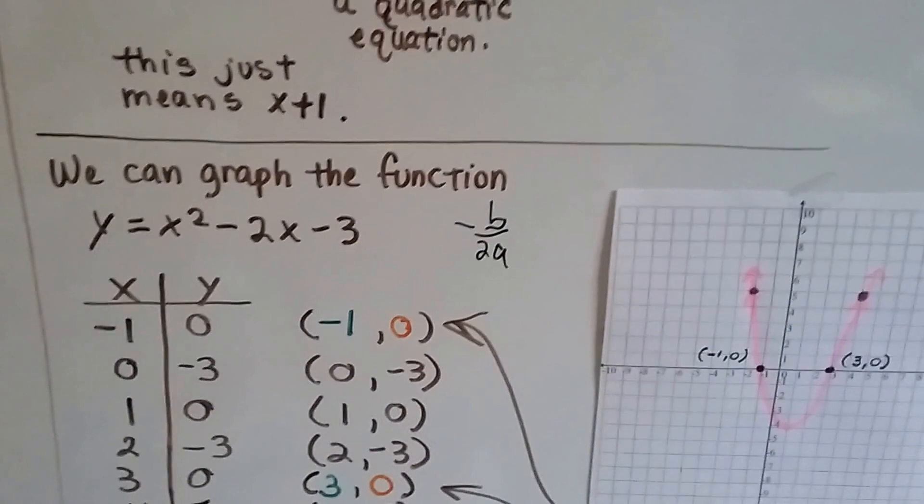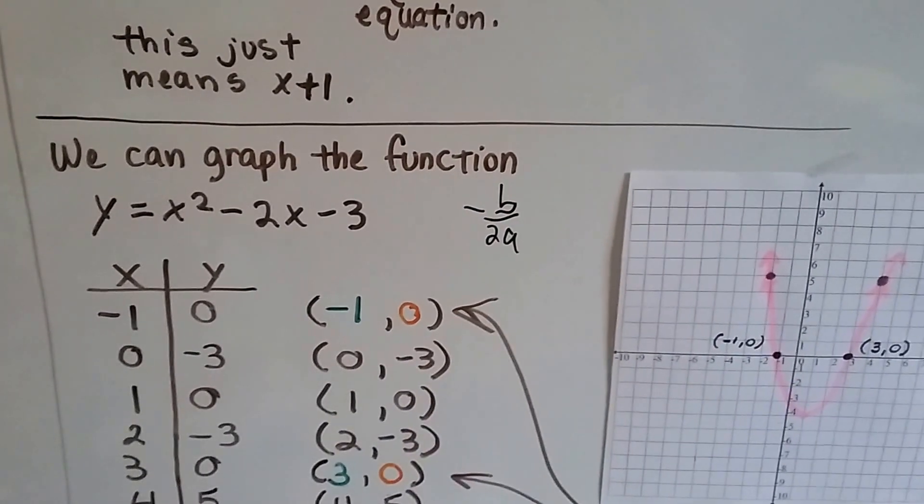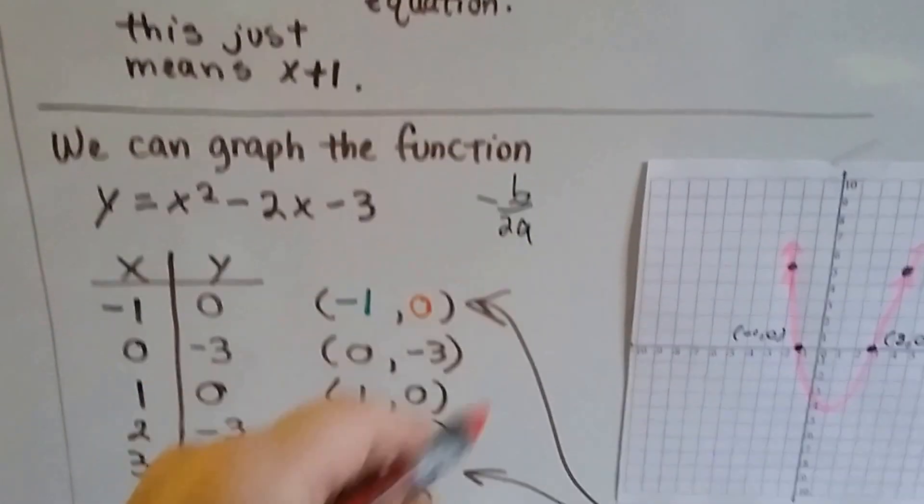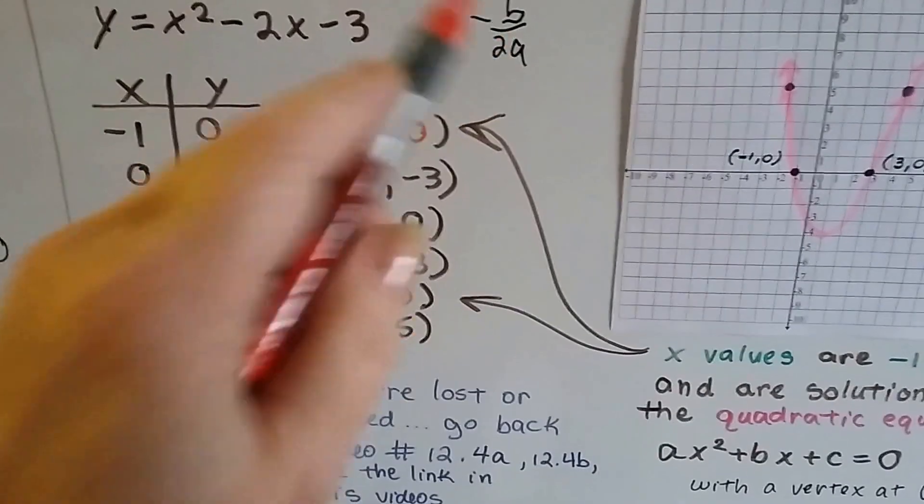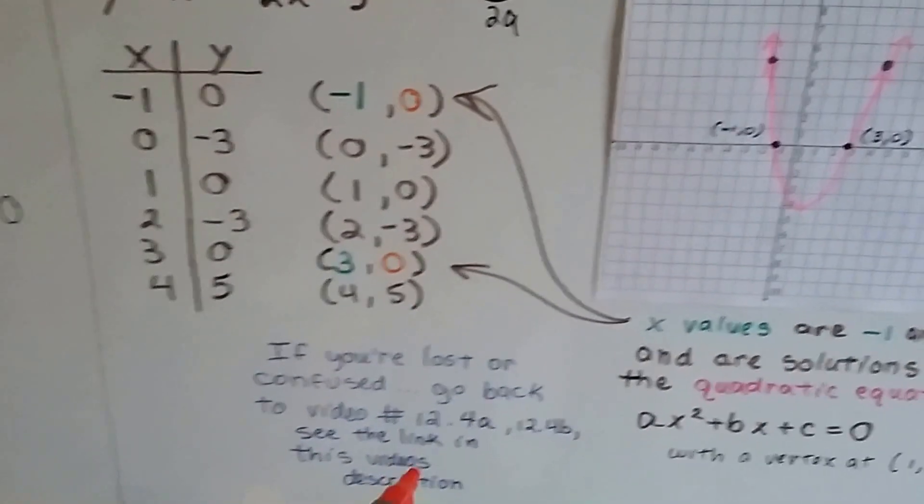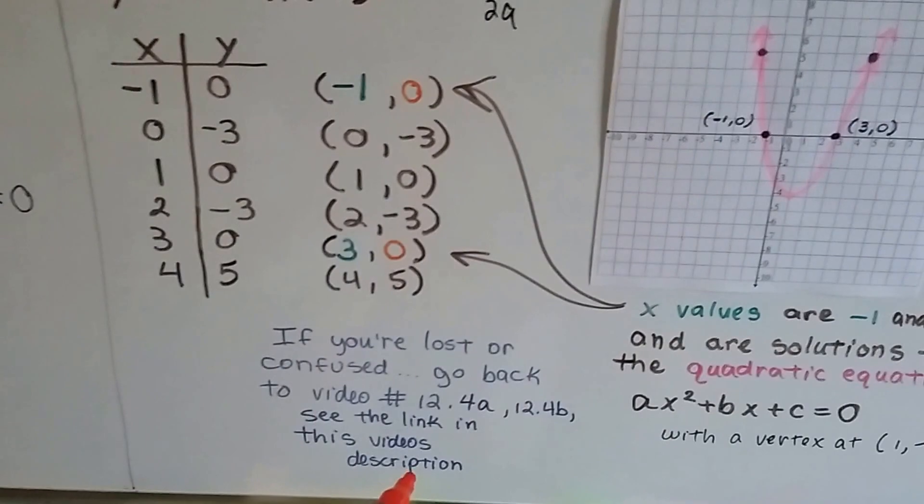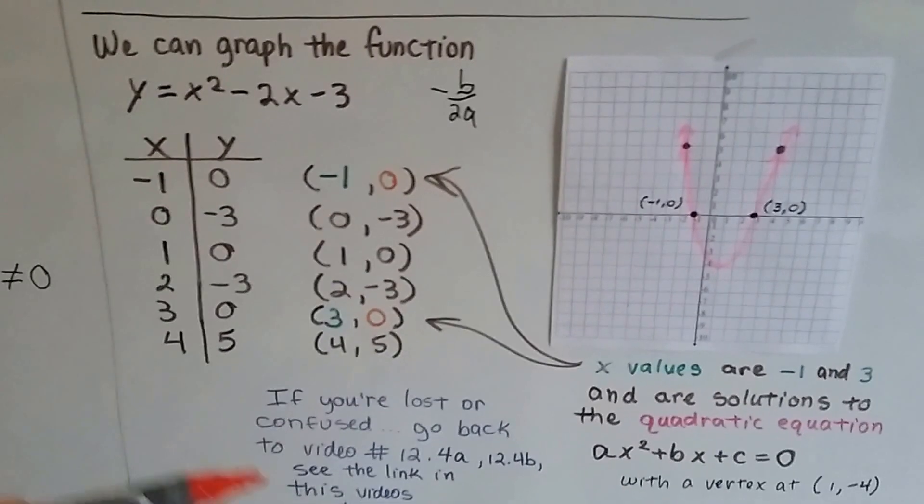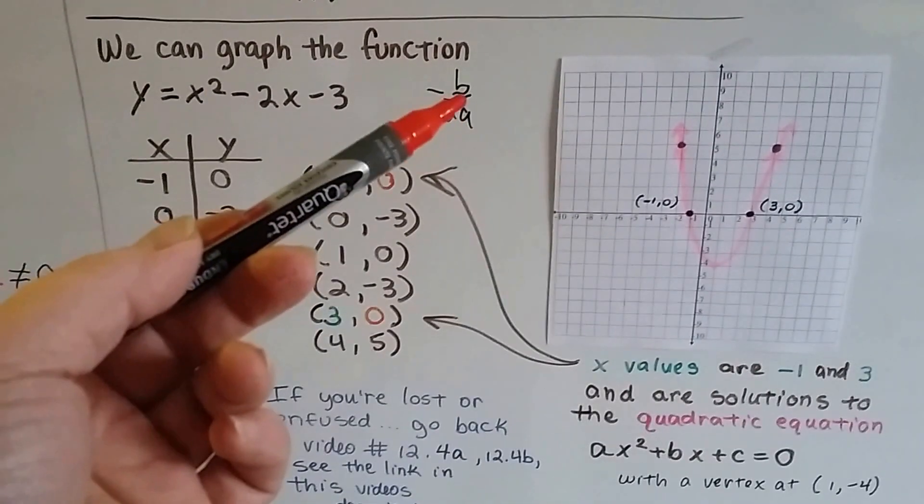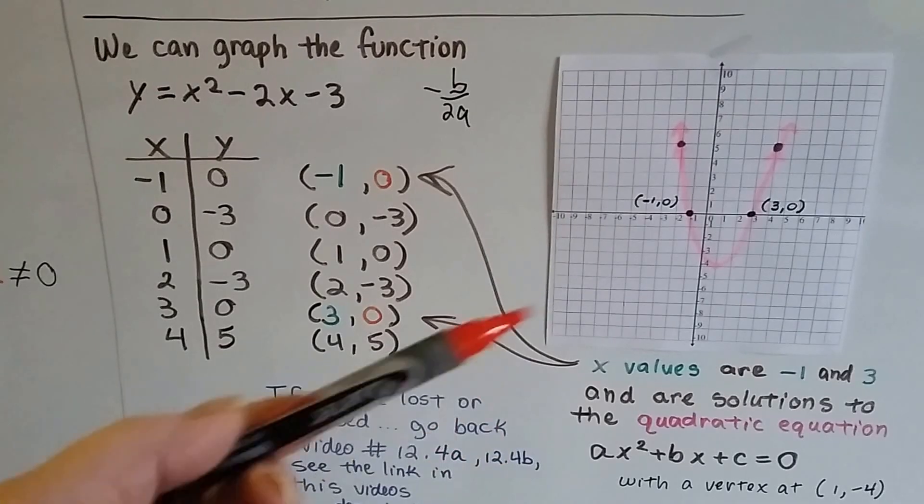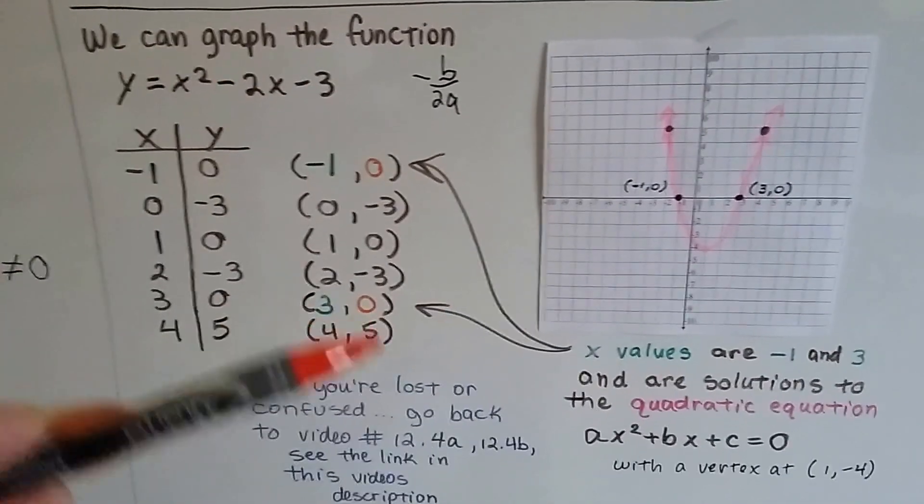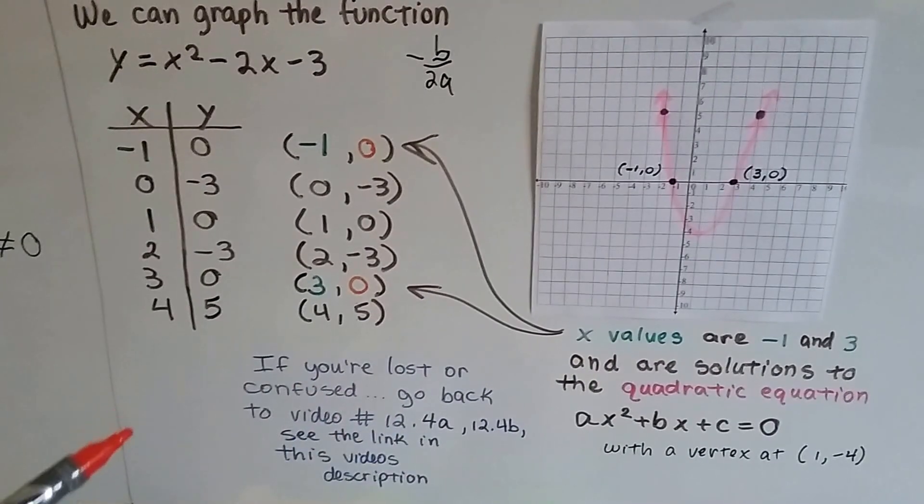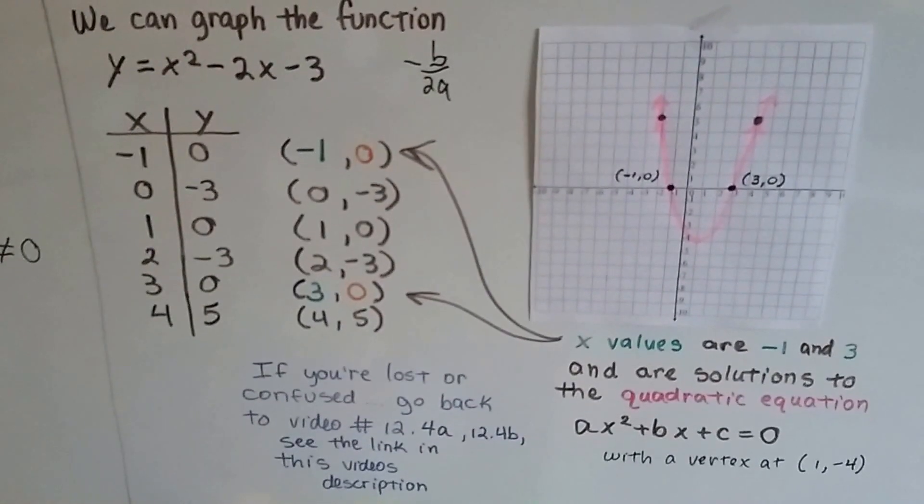We can graph the function, y equals x squared minus 2x minus 3. Remember we used negative b divided by 2a to find the vertex? Now if you're lost and you don't know what I'm talking about, you need to go back to videos 12.4a and 12.4b and watch those. Because we talked about graphing these functions using a table or using the vertex and the axis of symmetry. So you got ahead of yourself. There's links in this video's description that you can just go back and click on them, then come back to this one and you'll be fine. No confusion.